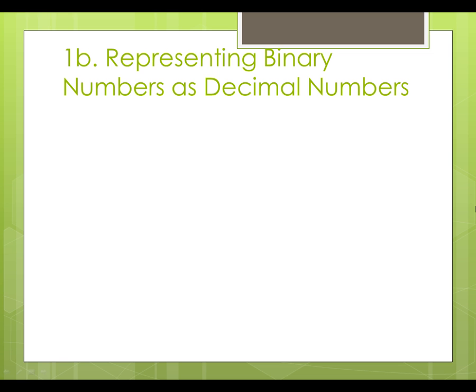To represent binary numbers as decimal numbers, we will multiply each bit with its multiplier, and sum the products. Suppose we have a binary number 10110101, we will convert it to its decimal form.